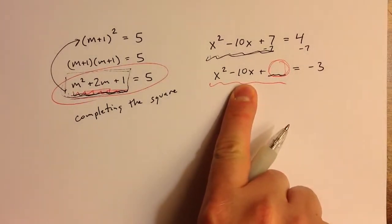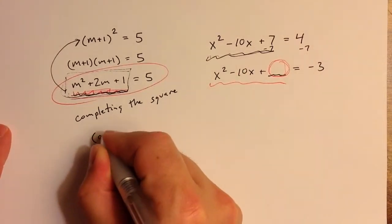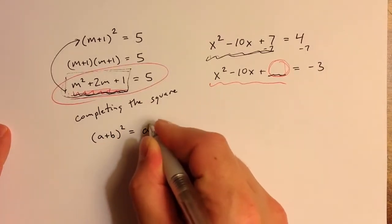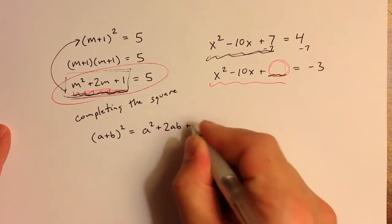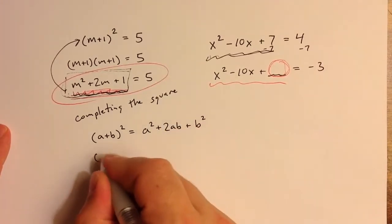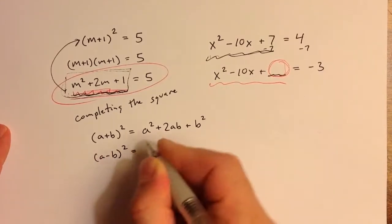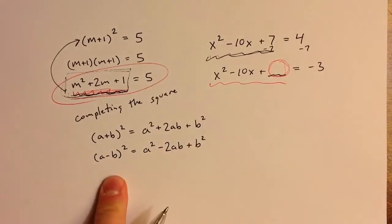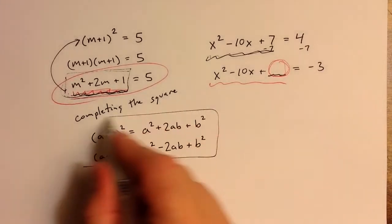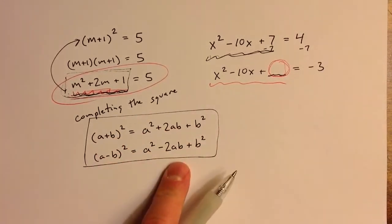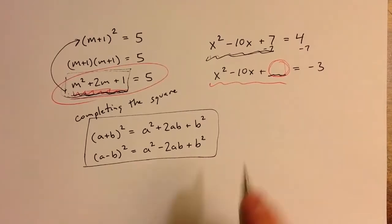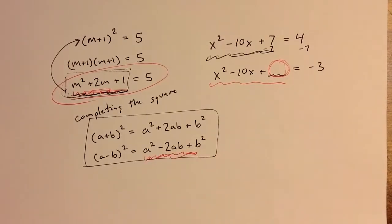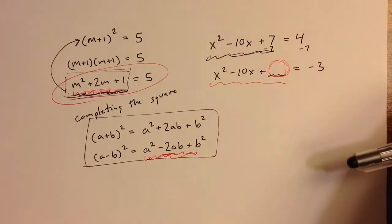There are two general forms for a perfect square trinomial. a plus b squared: the general form for that is a squared plus 2ab plus b squared. And a minus b squared: the general form for that is a squared minus 2ab plus b squared. You'll see that those formulas are true if you multiply out a plus b squared and a minus b squared. Because I have a minus 10, the perfect square trinomial with a minus 2b is most appropriate.